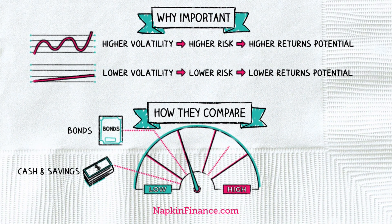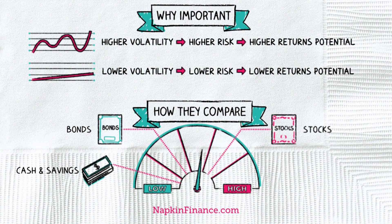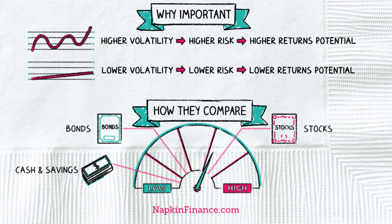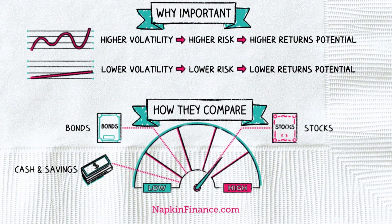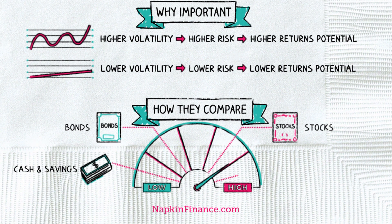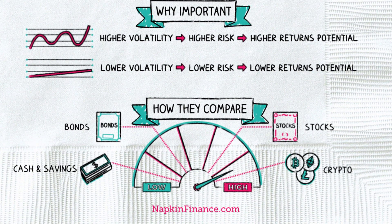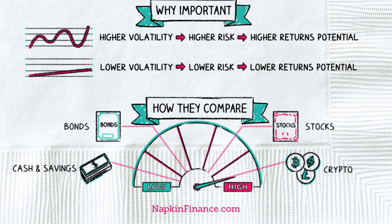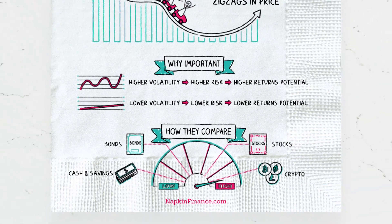Bonds are much less volatile than stocks and riskier investments. Stocks can at times show big price swings up or down, making them a higher volatility investment. And cryptocurrency can take wild price swings almost overnight, making it one of the most volatile investment types around.